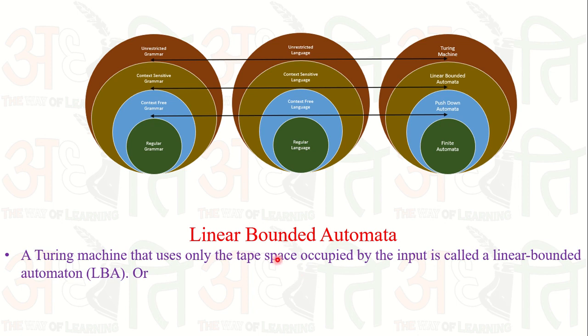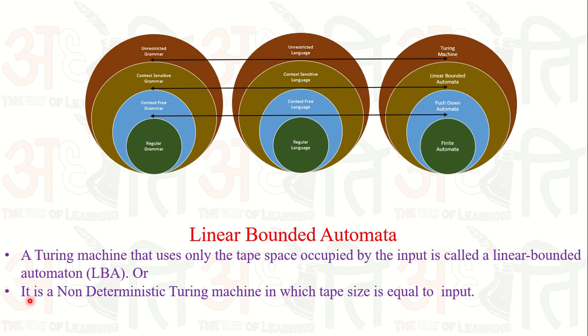Linear bounded automata is a non-deterministic Turing machine. Non-deterministic means for a particular input there is more than one derivation — more than one move. At a particular state with one input, we get more than one output or movement. So it is a non-deterministic Turing machine in which the tape size is equal to the input size.